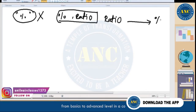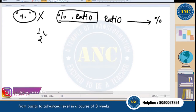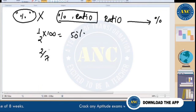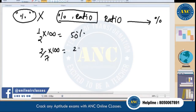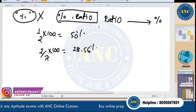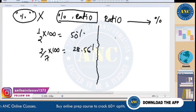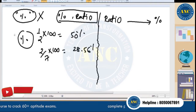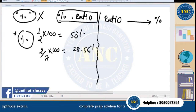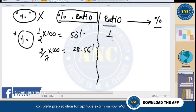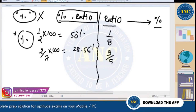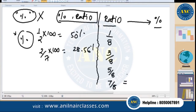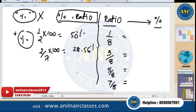For example, 1/2 multiplied by 100 gives 50%. Similarly 2/7 multiplied by 100 gives 28.56%. I need only four specific values: 1/8, 3/8, 5/8, and 7/8 in terms of percentages.